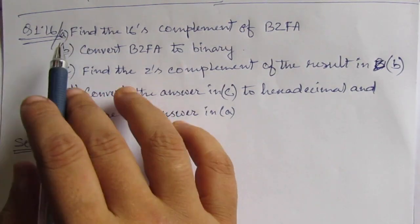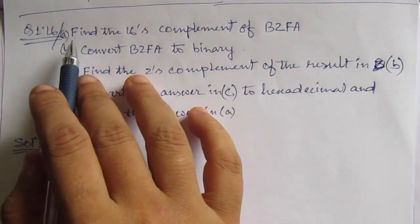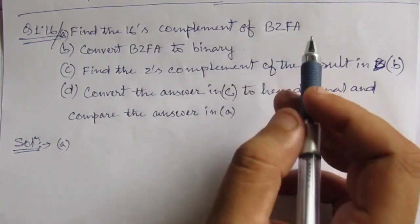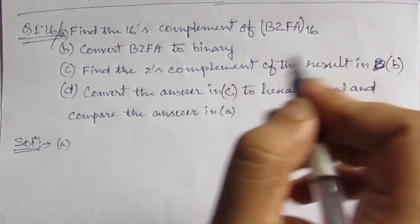This problem has 4 parts: A, B, C, and D. First of all, we have to find out the 16's complement of this hexadecimal number. This number is in hexadecimal.